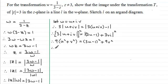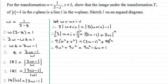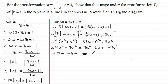Expanding the left gives 9U squared plus 9V squared. Expanding the right gives 9U squared minus 6U plus 1 plus 9V squared. Subtracting 9U squared and 9V squared from both sides gives 0 equals 1 minus 6U. Making U the subject by adding 6U to both sides and dividing by 6, we get U equals 1/6.